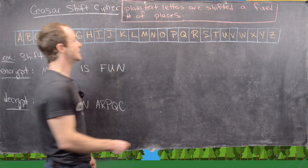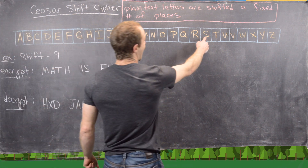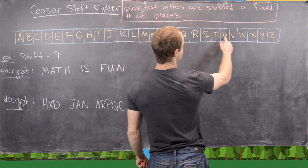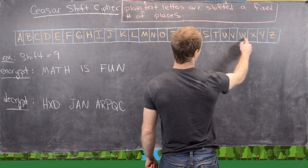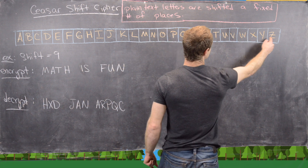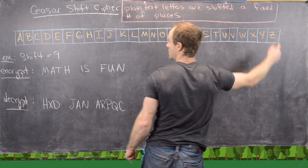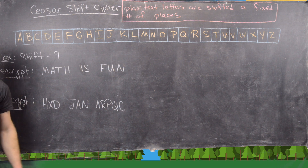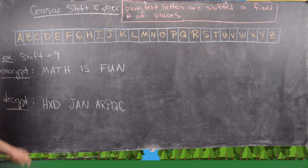Then if we have the letter S, that's going to be shifted — but then we loop back around — 9 spaces to the letter B.